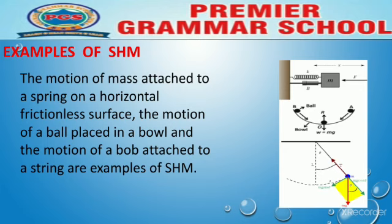یہ تھی definition، اب اس کی کچھ examples دیکھتے ہیں۔ Examples of simple harmonic motion: the motion of a spring on a horizontal frictionless surface, the motion of a ball placed in a bowl, and the motion of a ball attached to a string are examples of simple harmonic motion.